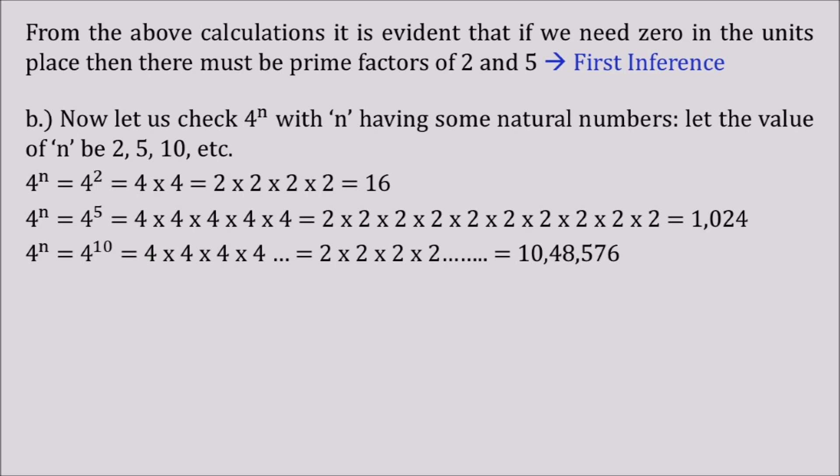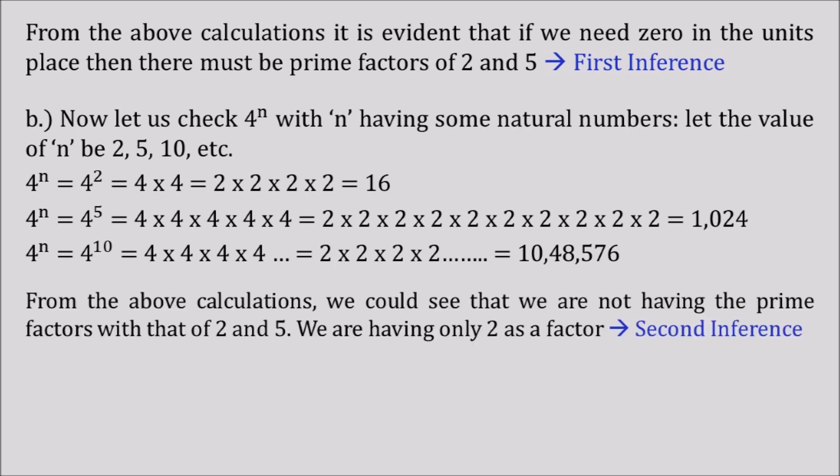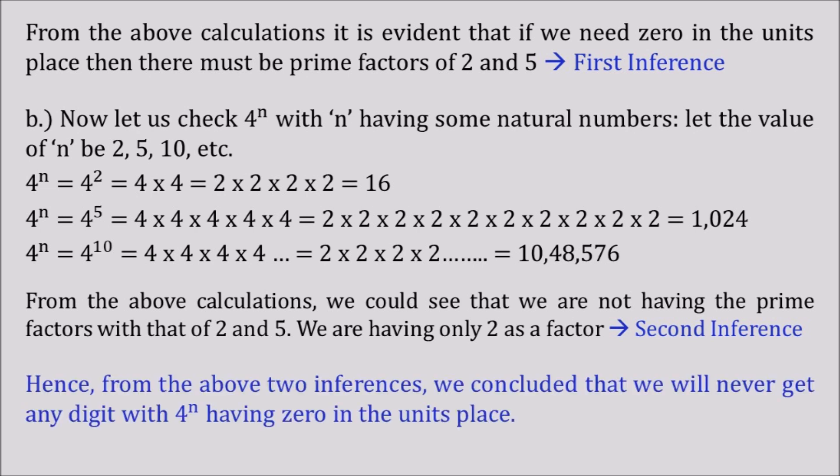If you look into the factors, we are getting the prime factor of 2 only. 5 is not there. You could see 5 is not at all present in any of the factors. Guys, you can test any natural number keeping in view of 4^n, and you could definitely see that we'll never get 5. As we are not having 5, only having 2, it definitely will not have a zero. Let us name it as a second inference.